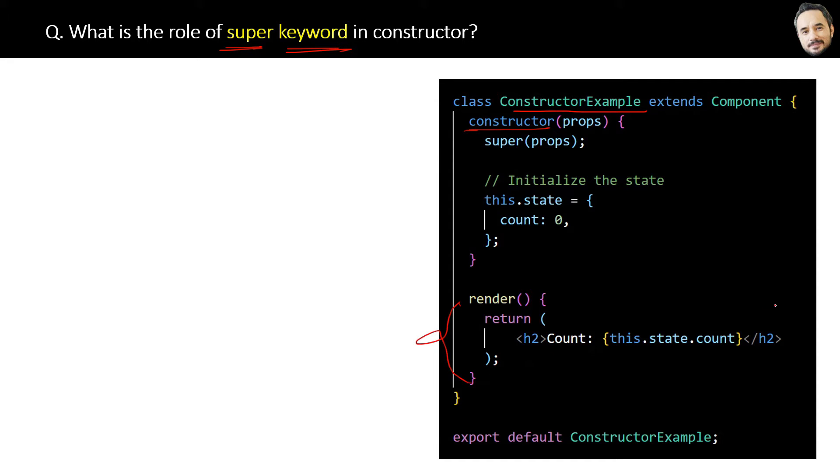the state in the browser. But what is the need of this super keyword here? The reason is the super keyword will execute the constructor of the parent class component. It will execute the constructor of the parent class.